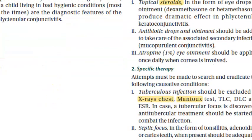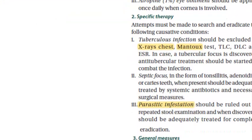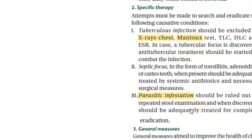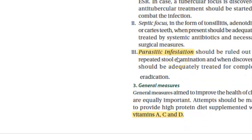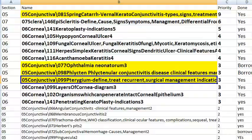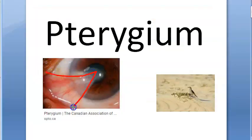Atropine reduces ciliary spasm and pain when the cornea is involved. Specific therapy: treat the septic focus — if tuberculosis is identified, treat that; for parasitic infestations, give deworming. General measures: vitamin A, C, D supplementation.